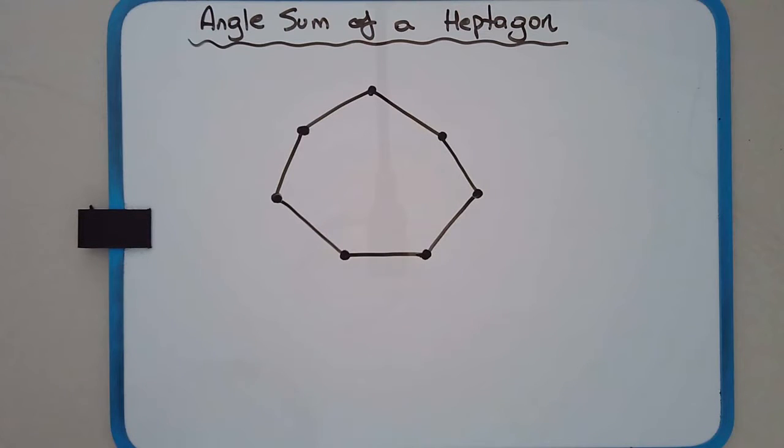Let's now work out the angle sum of a heptagon. A heptagon is a seven-sided polygon. It's not a very common polygon, or not as common as a hexagon, octagon, or pentagon.